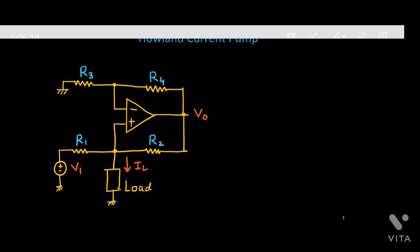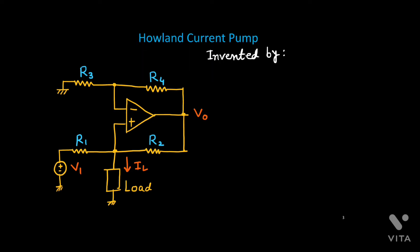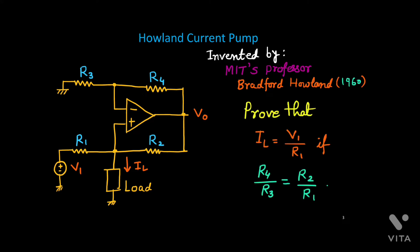This circuit was invented by MIT's professor Bradford Howland in 1960, thus the name is Howland current pump. Here we will try to prove that this current IL equals V1 upon R1 under the condition that the ratio R4 to R3 and R2 to R1 are the same. Then we will get a constant current IL which is independent of the load.